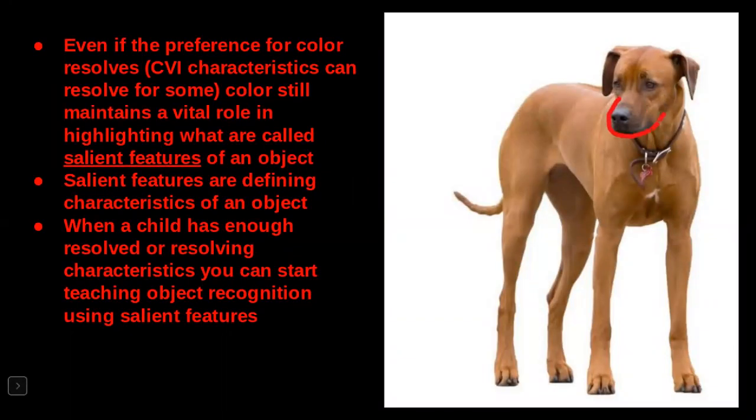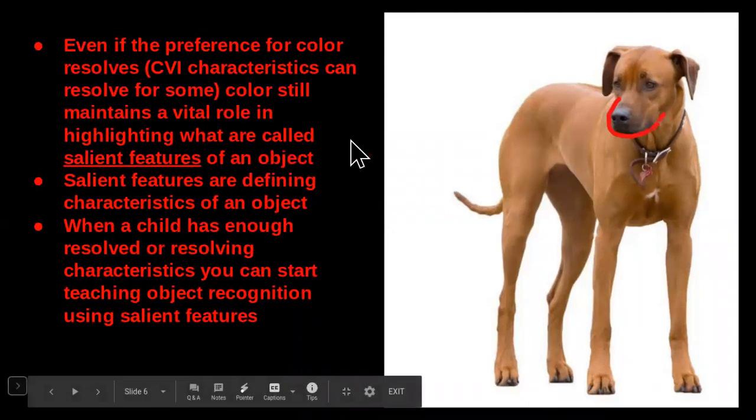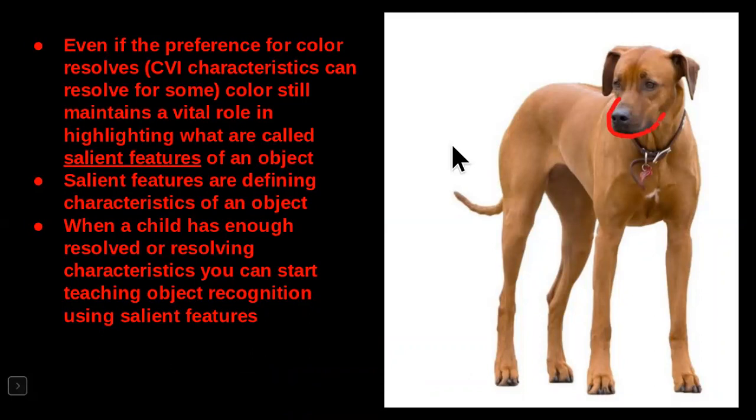So even when the preference for a certain color resolves, CVI characteristics can resolve for some, color still maintains a vital role in highlighting what we call salient features of an object. Incluso si la preferencia por el color se resuelve, las características de CVI pueden resolverse para algunos. El color sigue siendo importante. Esto se llama características sobresalientes de un objeto.